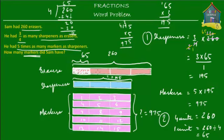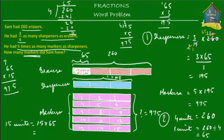If one unit is equal to 65, then how many are 15 units equal to? 15 units are equal to simply 15 times 65. How much is that? 65 times 15: 15 times 5 is 75, write down 5 and carry over 7. 15 times 6 is 90 plus 7 is 97. So you have 975. So 15 units are equal to 975.